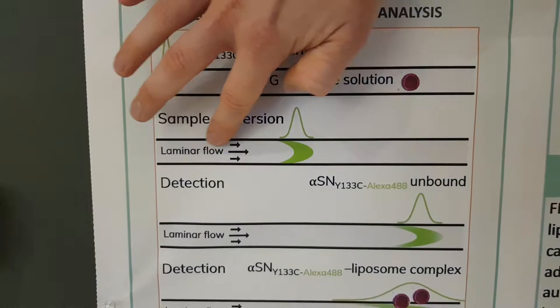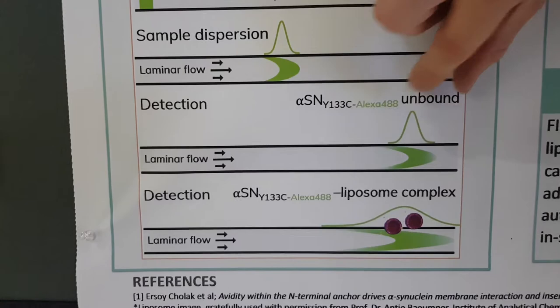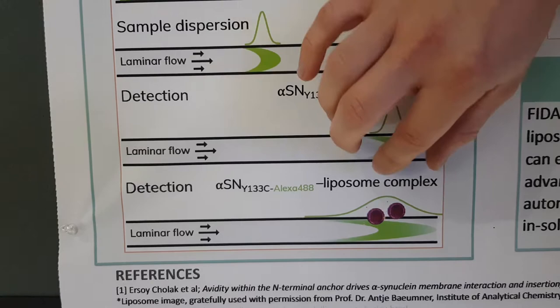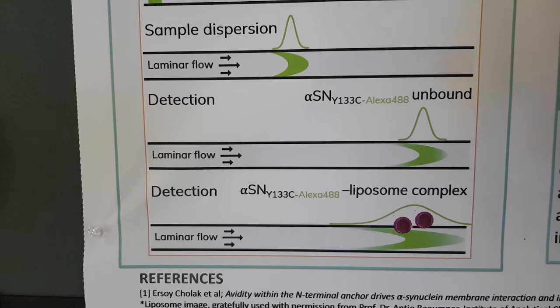If we have an unbound state we will have a narrow peak at the detection point; however, if we have a complex formed as a larger molecule, we will have a broader signal — and that is what is depicted here. So this is essentially what we measure in FIDA experiments: we measure molecular size.